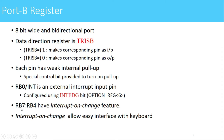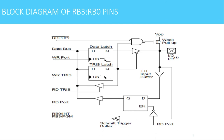RB7 to RB4 have an interrupt-on-change feature. Whenever any bit on pins RB4 to RB7 changes status, an interrupt can be generated. This facility can be used for interfacing keyboards to the PIC controller. The block diagram shown covers RB3 to RB0 — the lower 4 bits of the port B register.